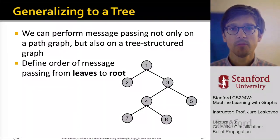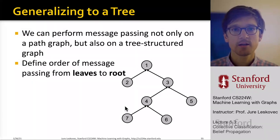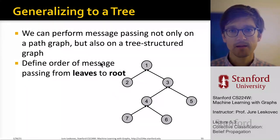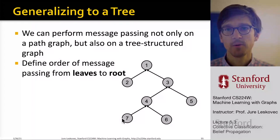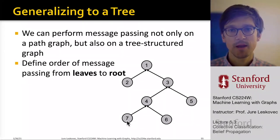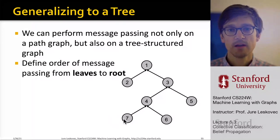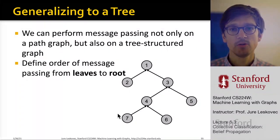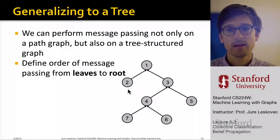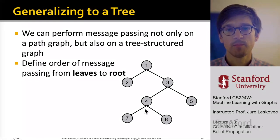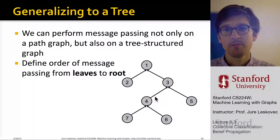We can apply the same algorithm on a tree. If the graph has an acyclic tree-like structure, we can perform message passing not just on a path graph but on a tree-structured graph. The important thing is to propagate messages from the leaves to the root. Leaves 5, 6, and 7 each say I am one node and set their message value to 1, then send messages to their parents. The parents sum the values from their children, add 1 for themselves, and pass that message on.